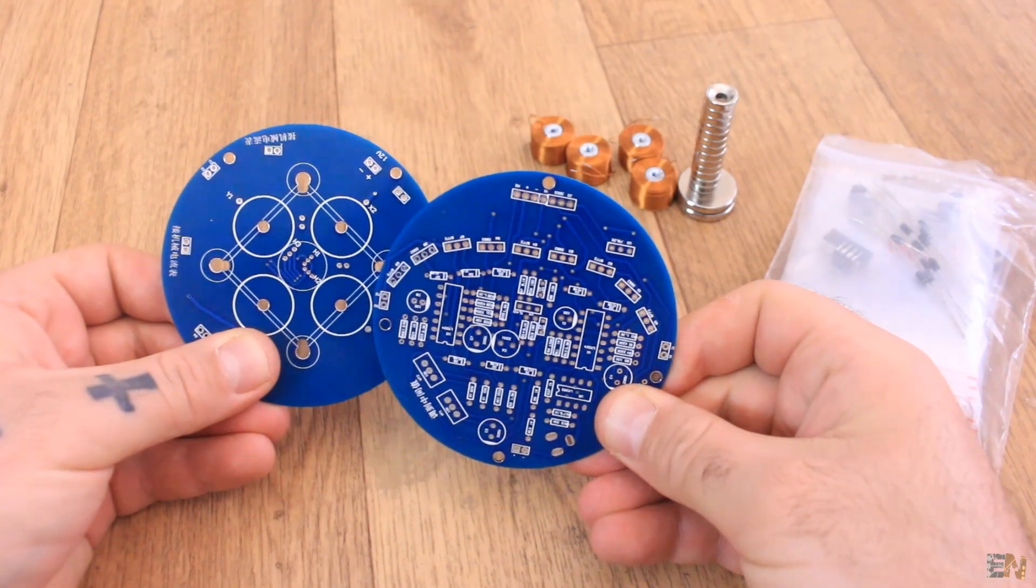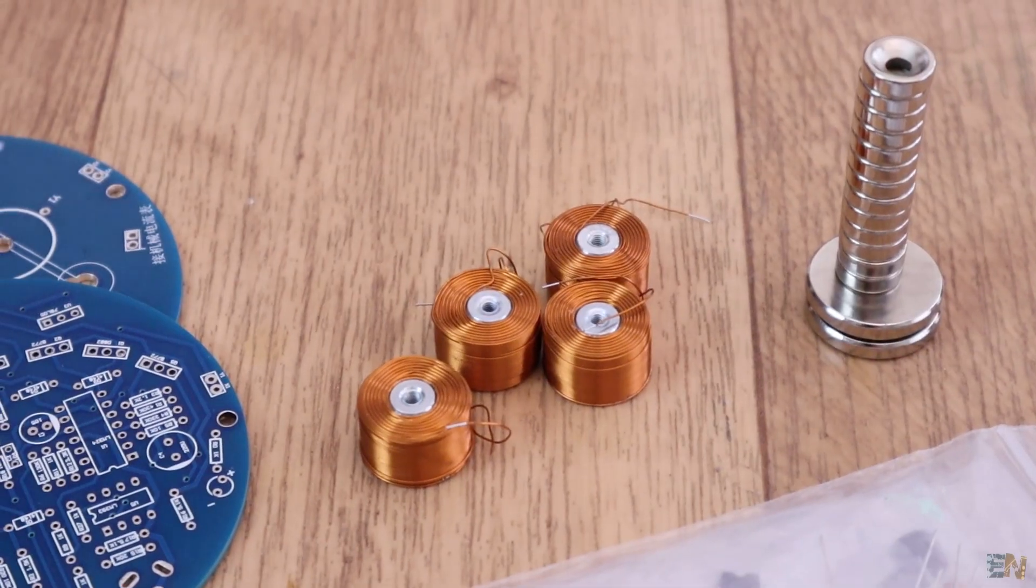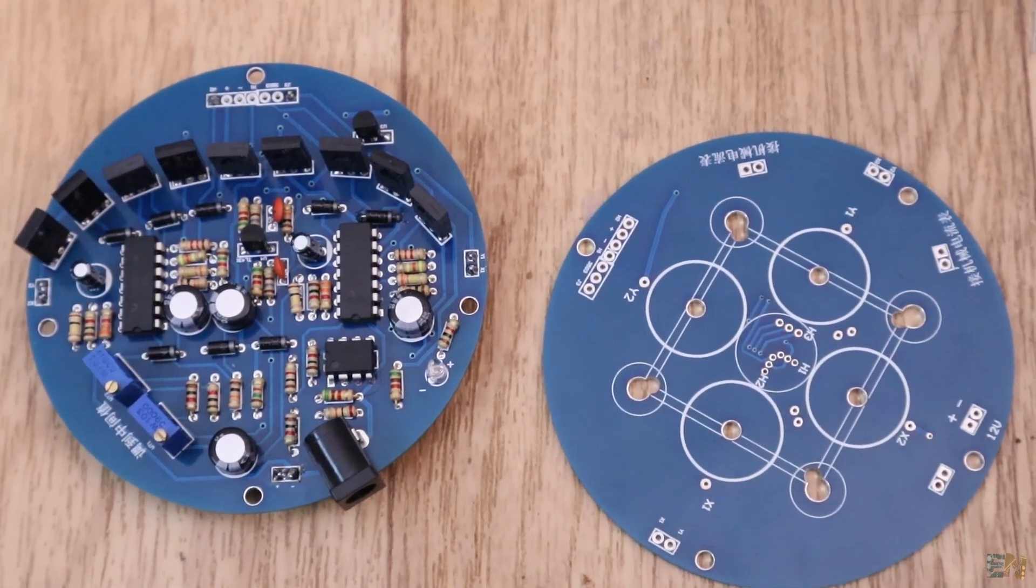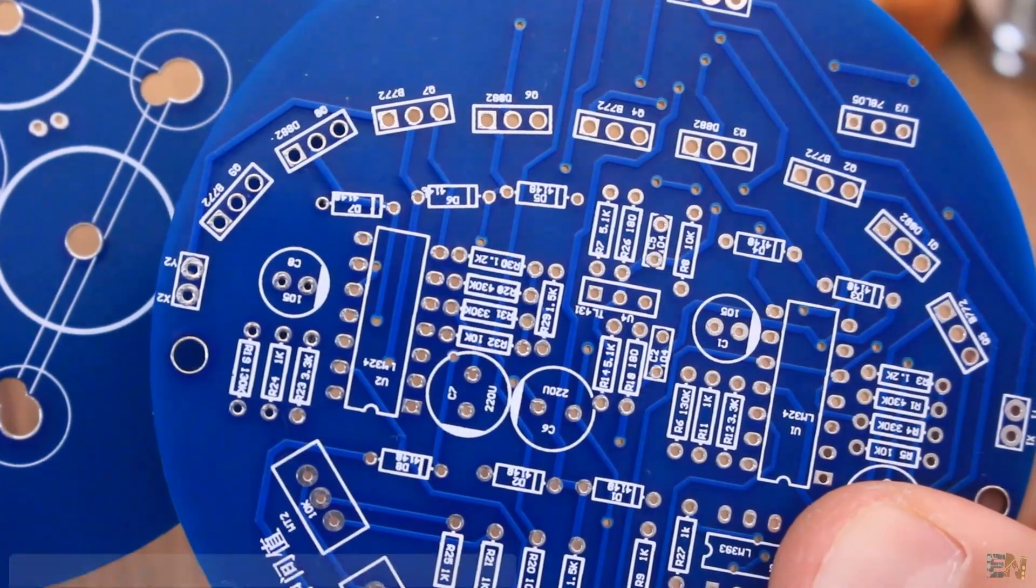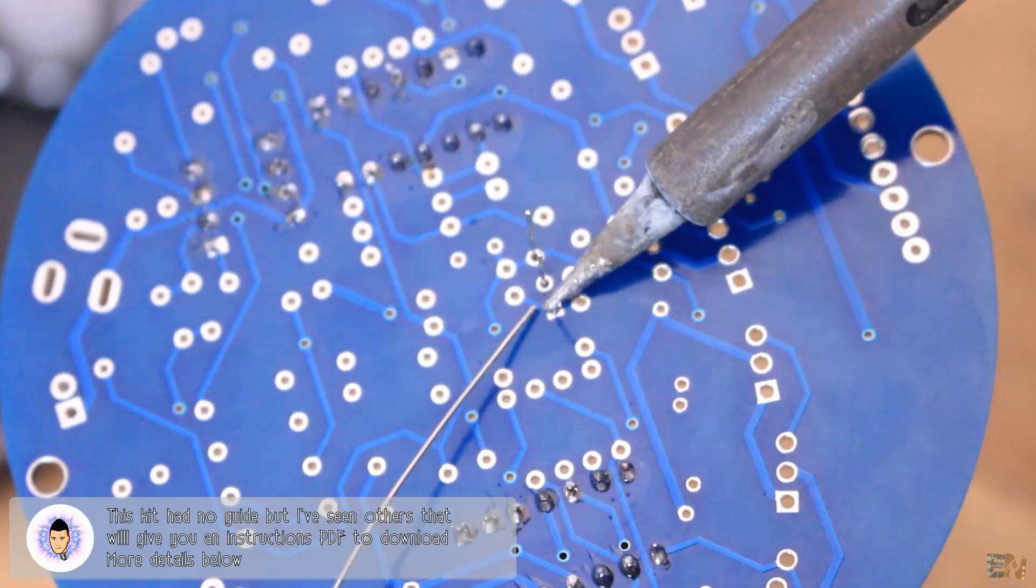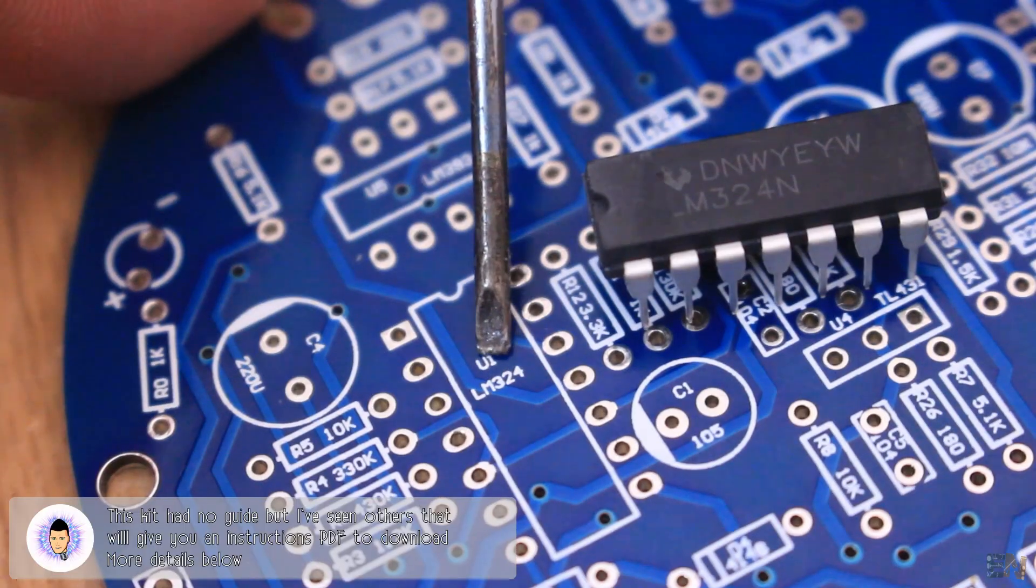What's up my friends, welcome back. I bought this kit from eBay for around 20 dollars. If you want one, you have a link below. It has no guide on how to mount it, but at least we have all the components labeled on the PCB and each plastic bag has the components written down. So mounting this should be very easy, just follow all the labels on the silk layer of the PCB.